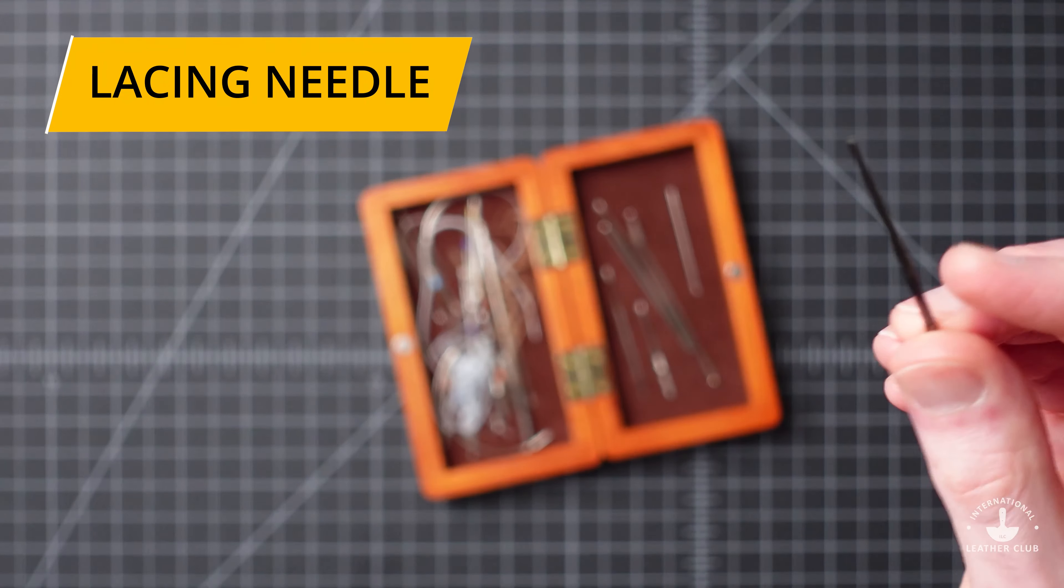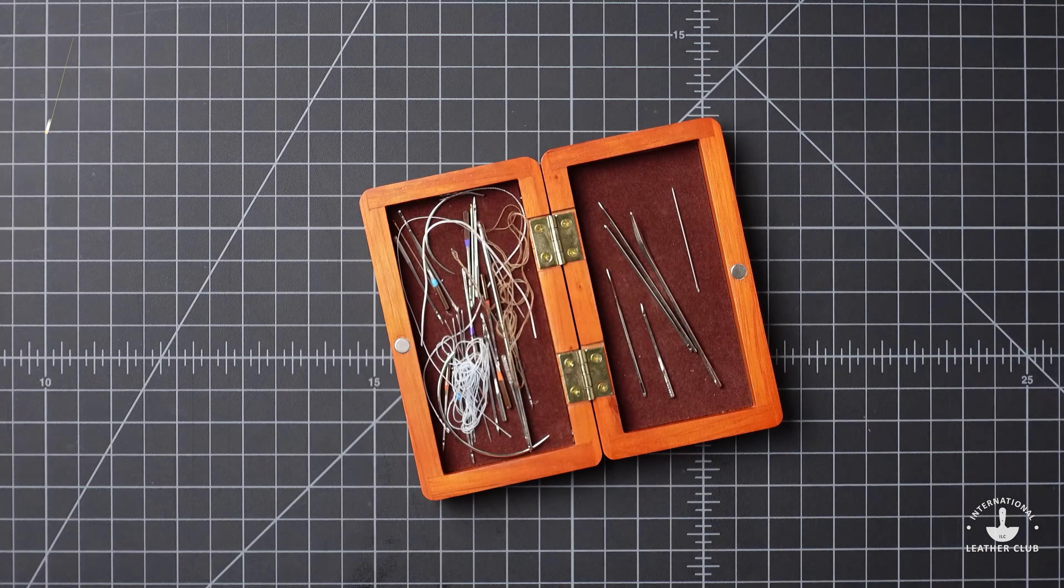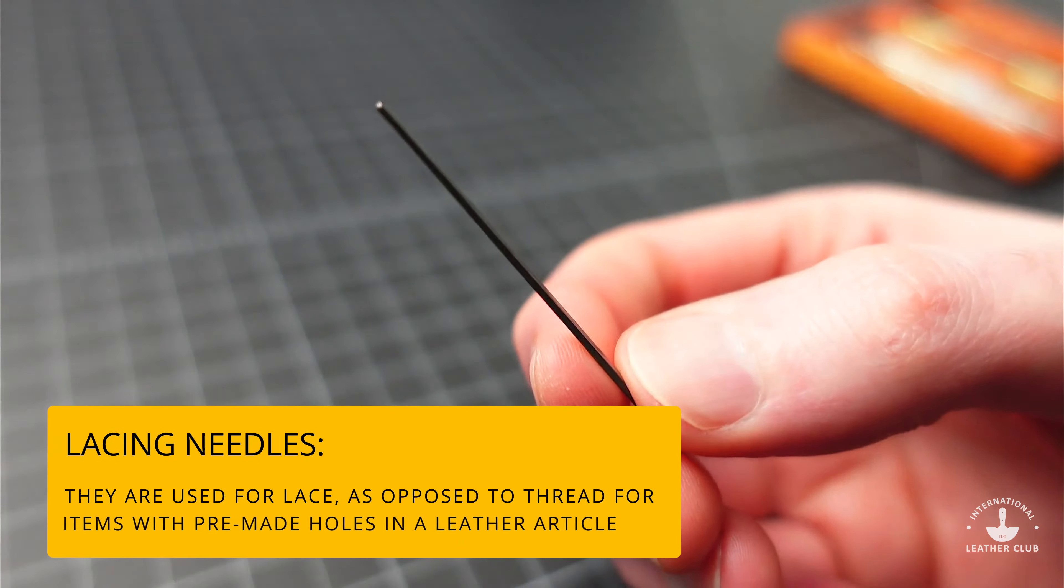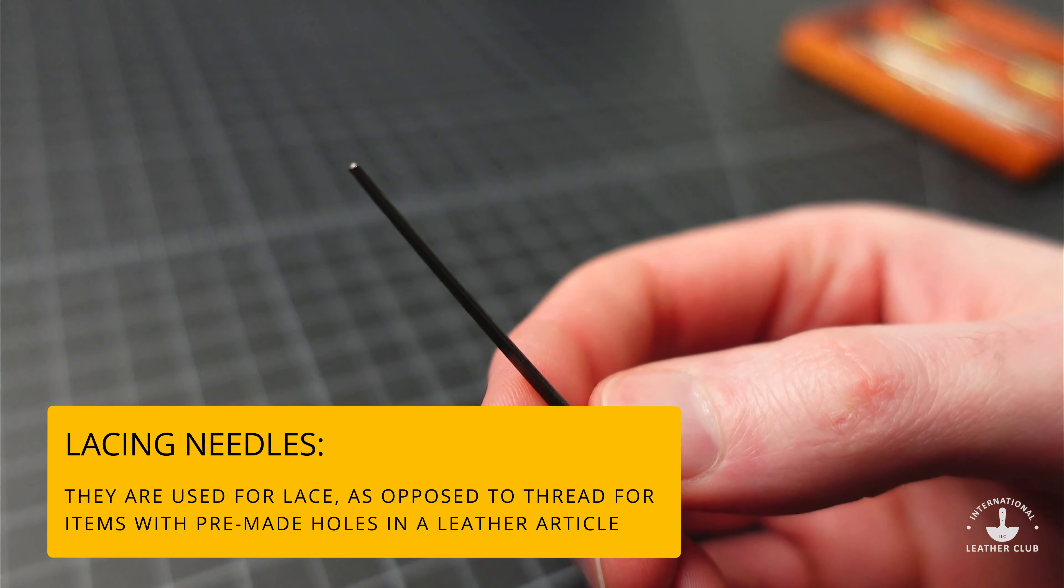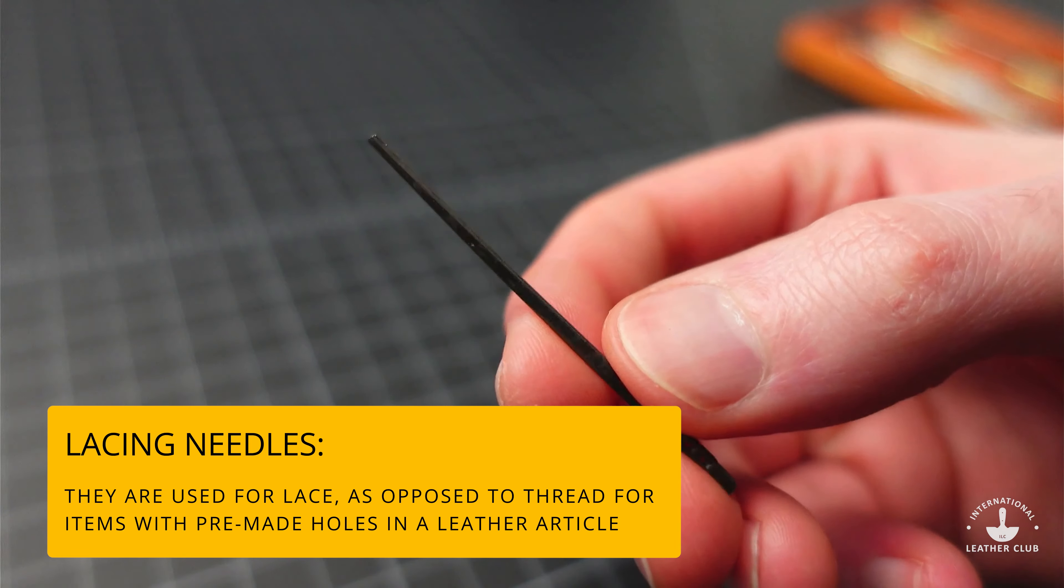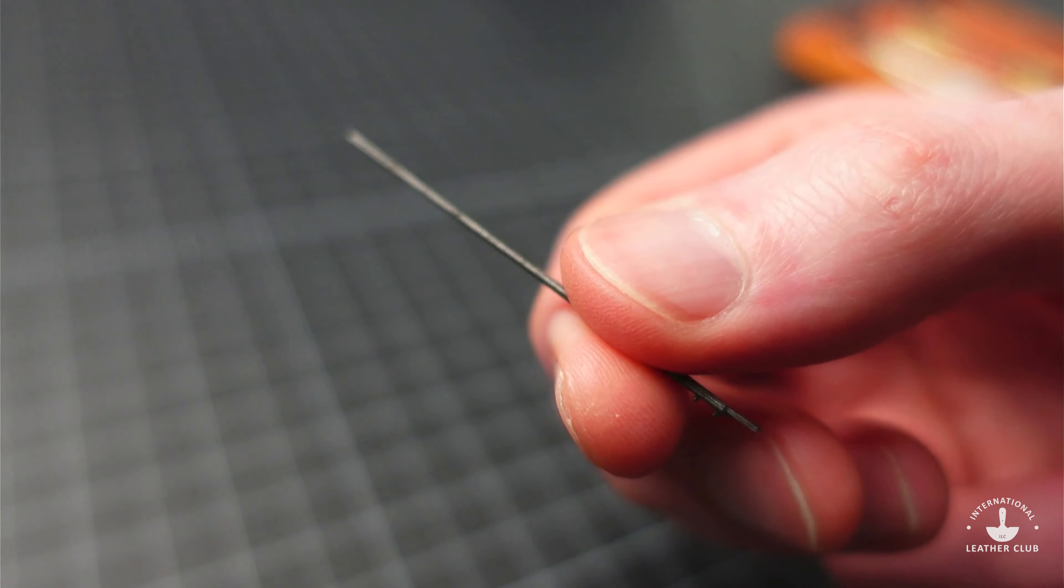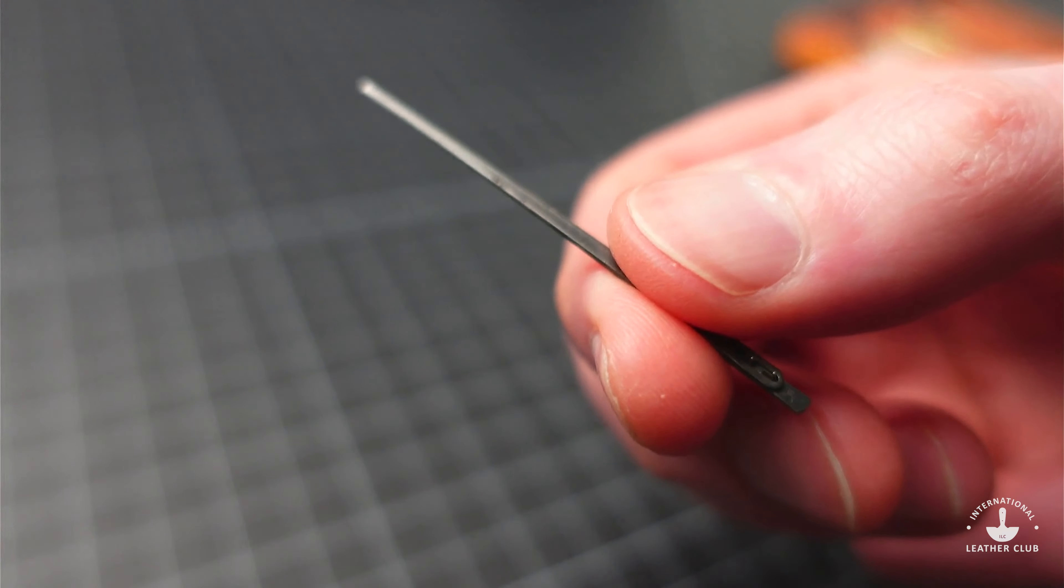The next one we have is called a Lacing Needle, and Lacing Needles are used primarily for lace as opposed to threads. It's typically put through leather goods that already have a hole put into them where that lace is going to go through. So there's no need for a sharp point because that hole already exists.